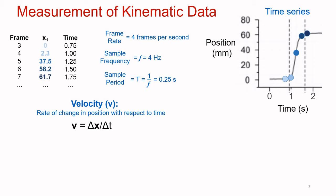Velocity is calculated by taking the change in position, delta x, and dividing that by the change in time, delta t. We can get a more accurate measure of velocity than the average velocity by looking at the change in position over the smallest unit of time we can measure. In our data table, the smallest time interval we have access to is the sample period. To calculate velocity most accurately, we look at the change in x divided by the change in time, using values from one frame and subtracting them from the values on the previous frame.